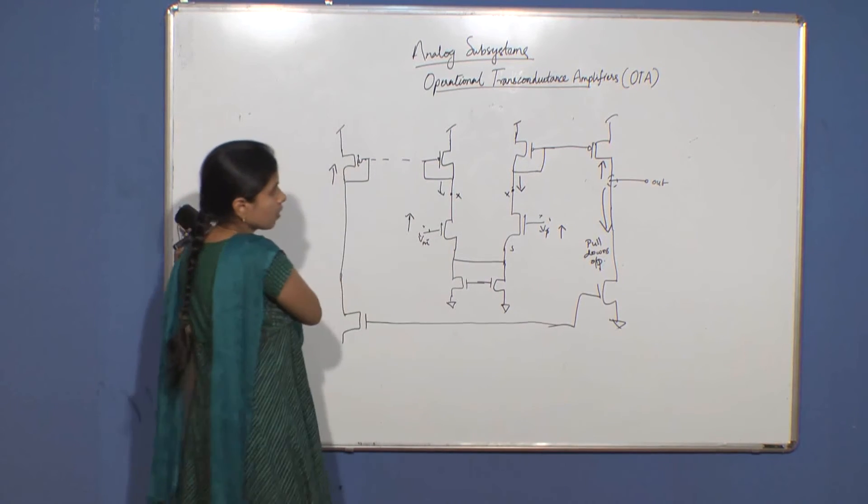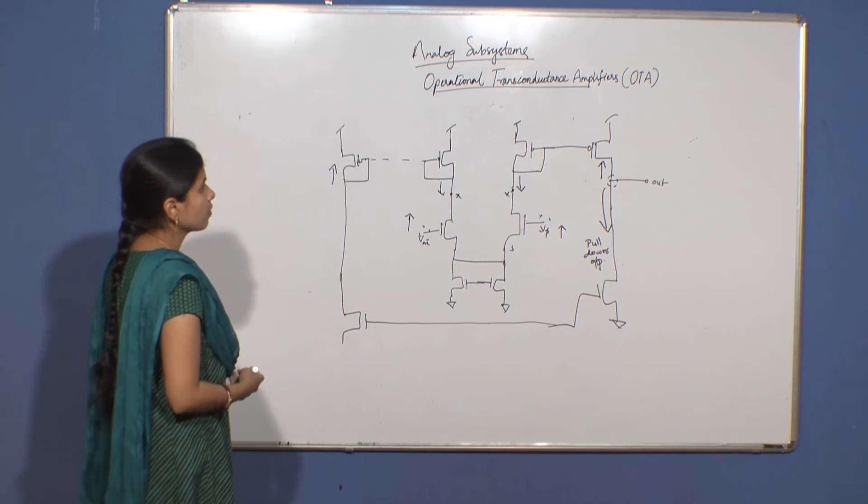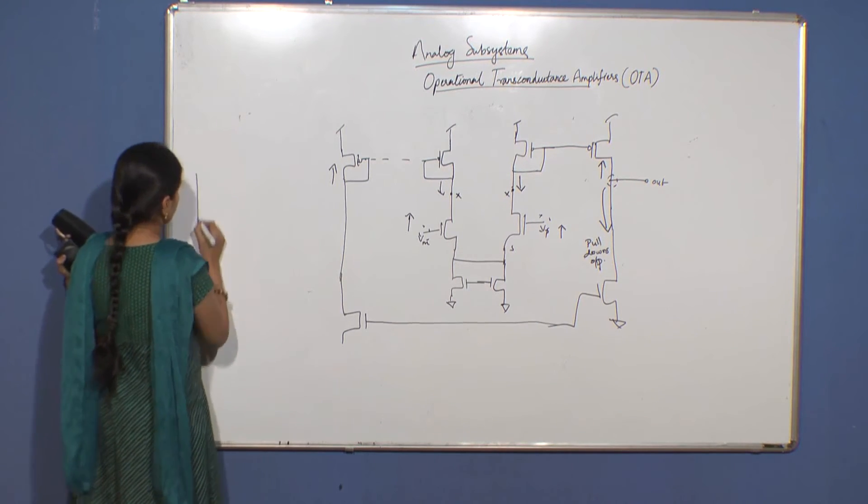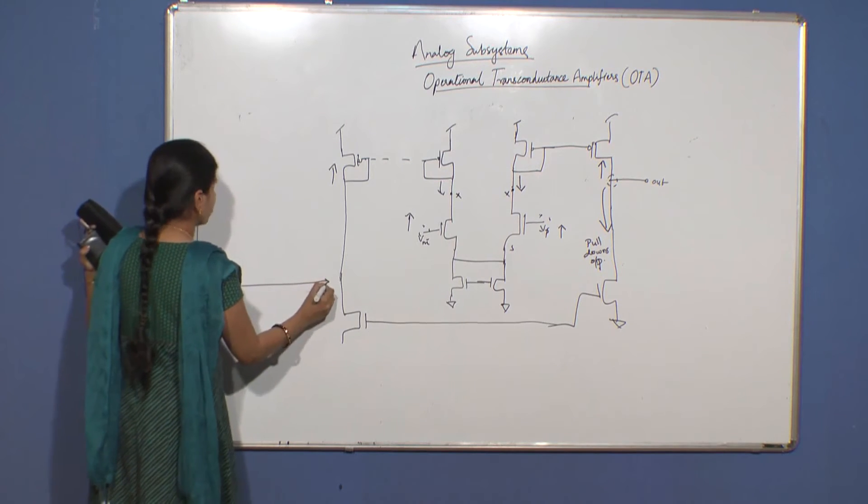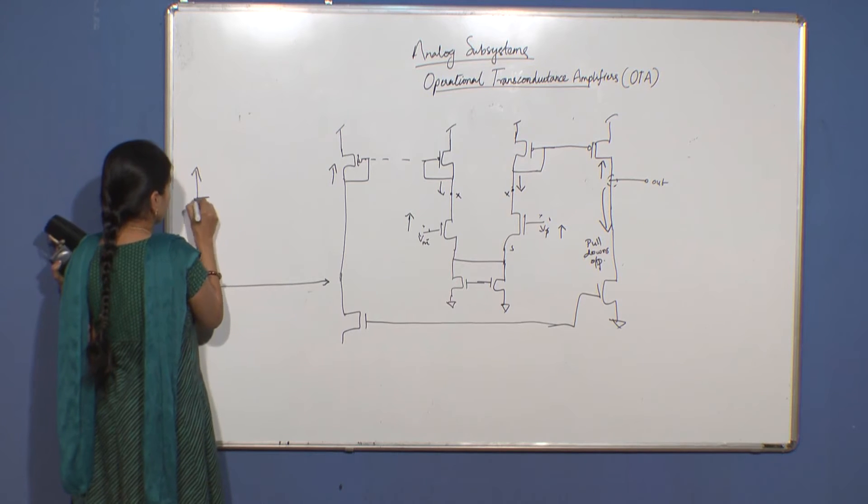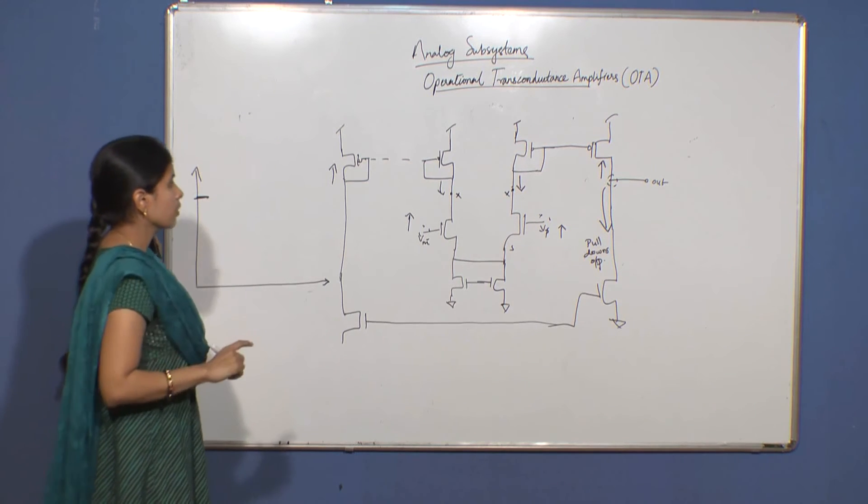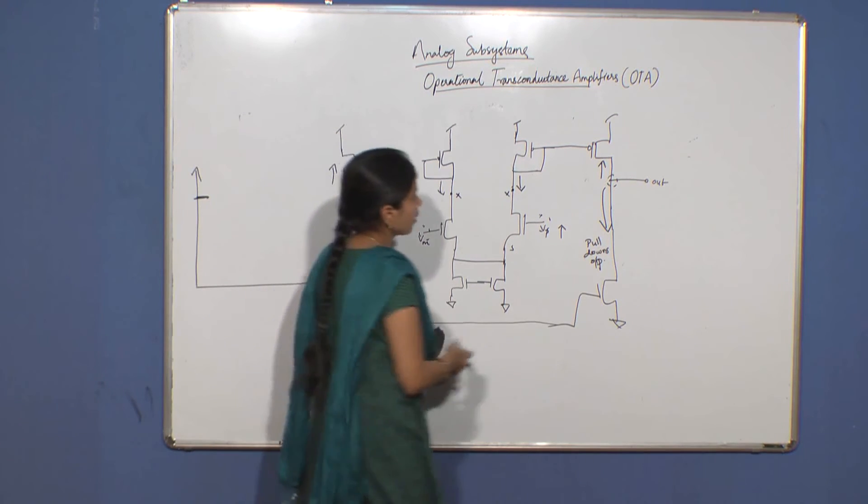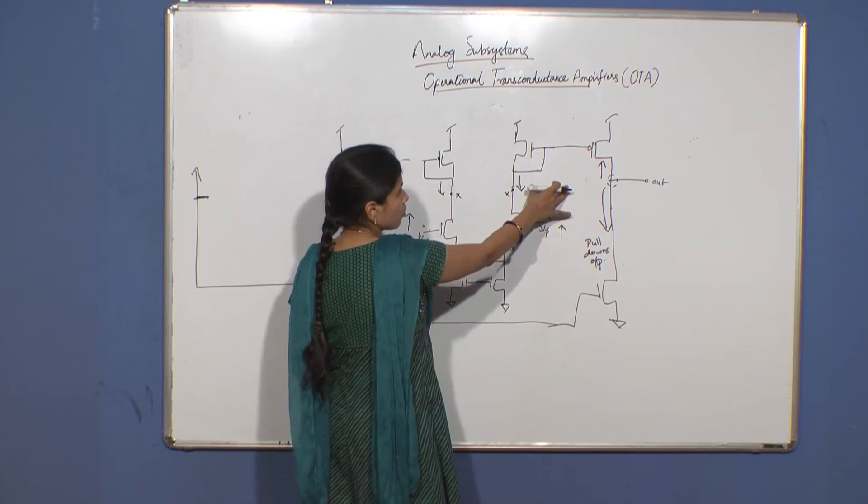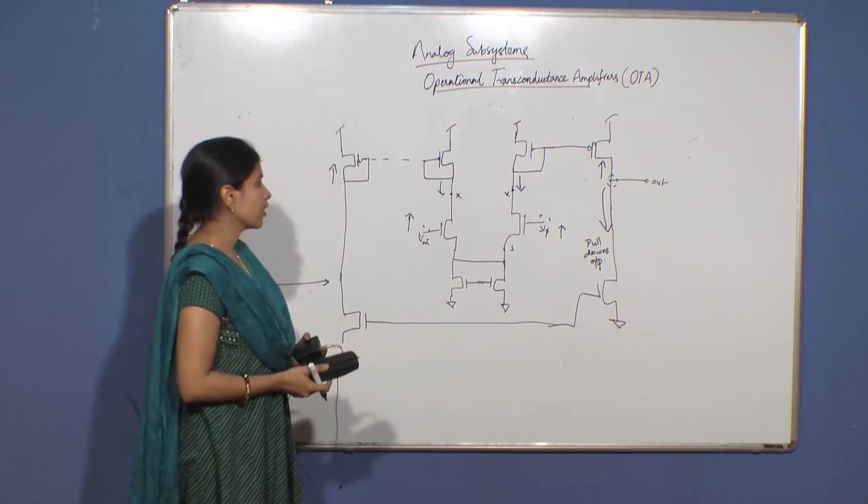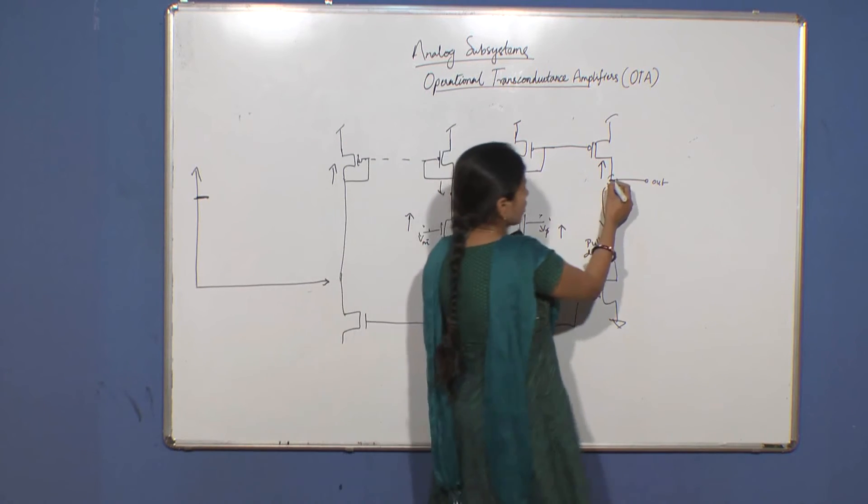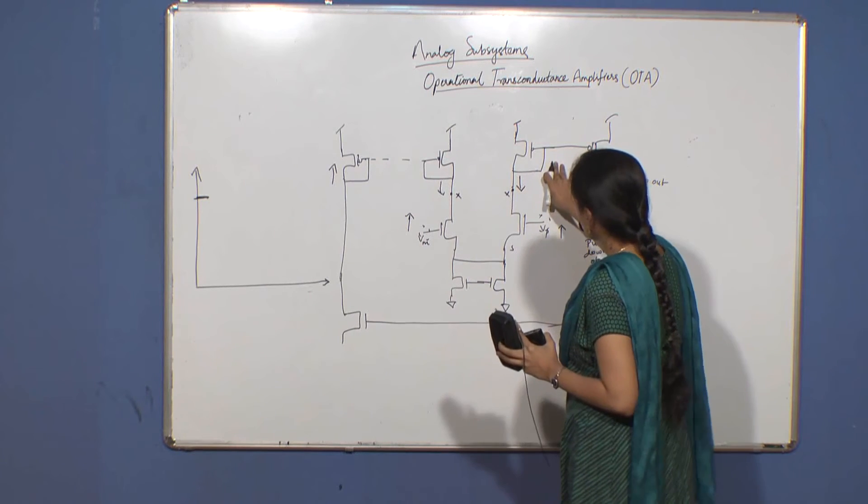Now let's see how the frequency gain of the amplifier changes. What is the low frequency gain? You can see that now you've used a cascode current mirror load, so definitely your open circuit gain has to be increased because your gm is increased.